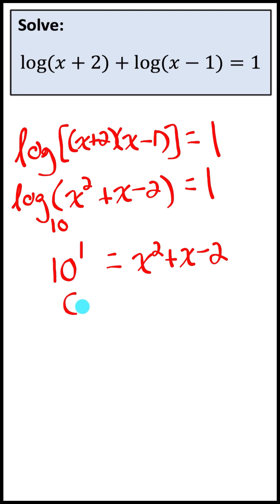Now it's just a quadratic to solve. Set it to zero, that quadratic factors to x plus four times x minus three.